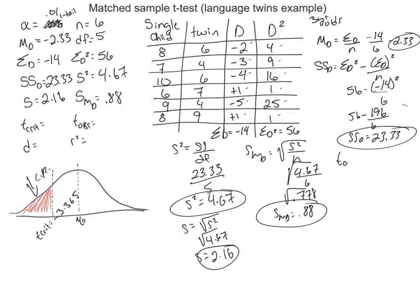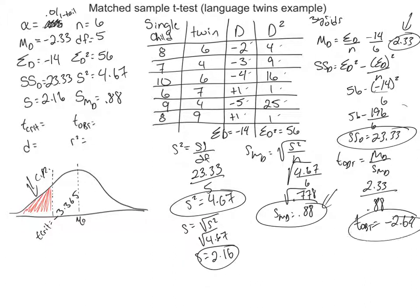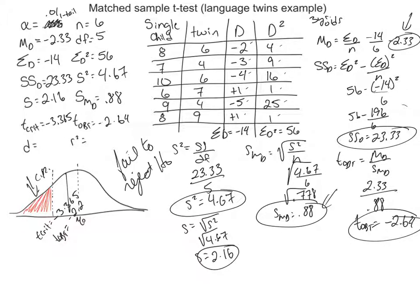Now we have everything for the t-obtained formula. T-obtained is the mean difference divided by the estimated standard error of the mean difference: negative 2.33 divided by 0.88, giving a t-obtained of negative 2.64. Compared to the critical value of negative 3.365, that's not enough. So we fail to reject the null hypothesis — twins did develop language slower, but not statistically significantly slower.